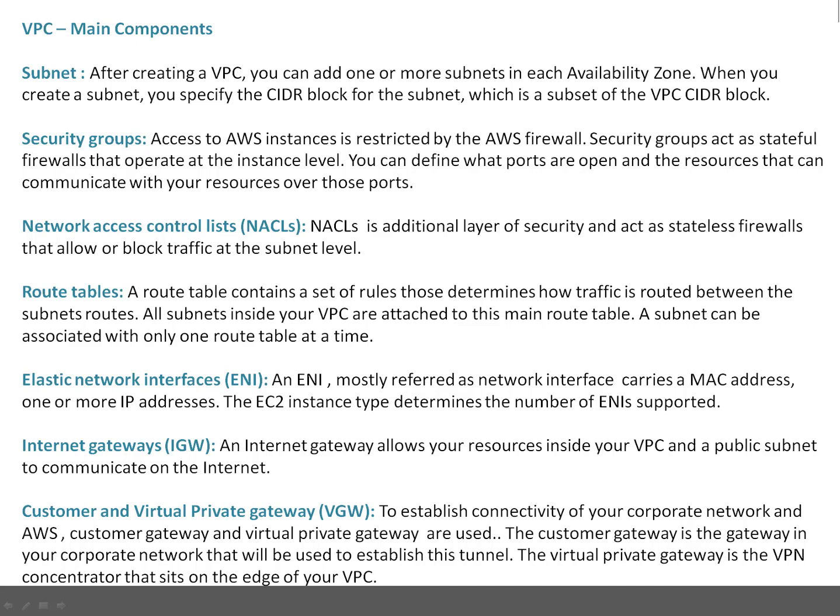Route tables contain a set of rules that determine how traffic is routed between different subnets. All subnets inside your VPC are attached to the main routing table, which is automatically created when you create the VPC. You can associate a routing table to a particular subnet, and a subnet can be associated with only one route table at a time.